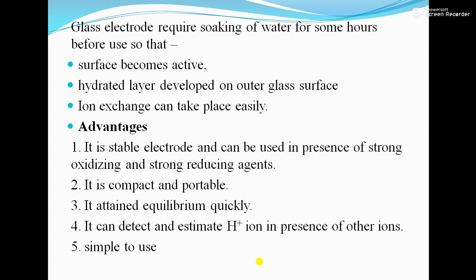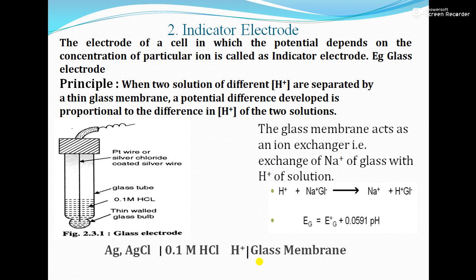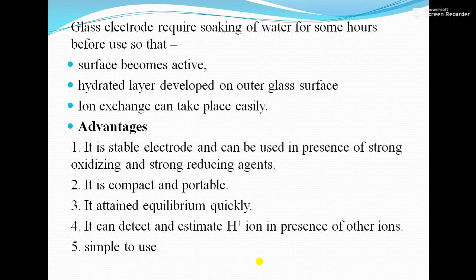The advantages of the glass electrode are: first, it is a stable electrode that can be used in the presence of strong oxidizing and strong reducing agents; second, it is compact and portable; third, it attains equilibrium quickly; fourth, it can detect and estimate H⁺ ions in the presence of other ions; and fifth, it is simple to use.